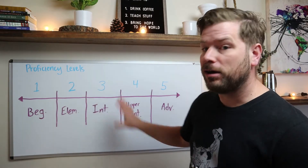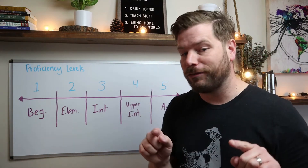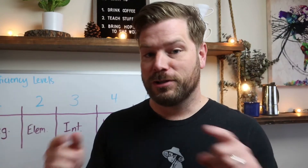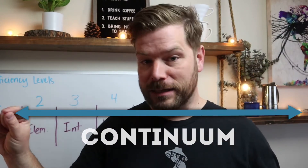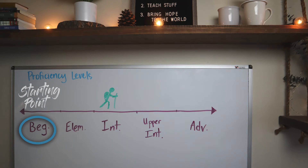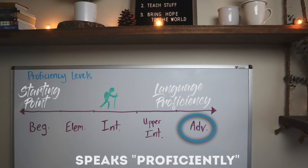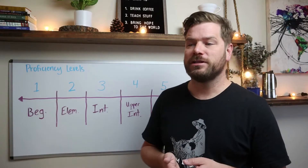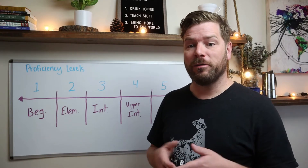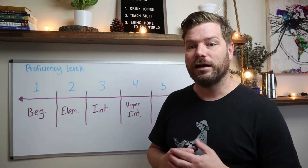We can create all sorts of boxes around these different levels and around these different types of students. But another way to visualize our students is to use what we call a continuum. On one side of our continuum is where we would place our beginners, the starting point for all language learners. On the opposite side is where we would place an advanced student, someone who speaks the language proficiently — and for many language teachers, this might be the goal for all language learners.